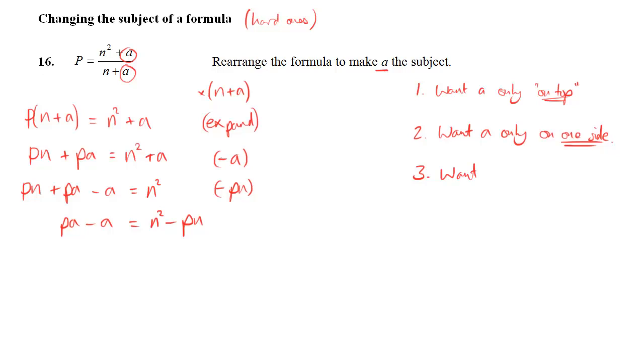Now I've got A all on one side, but I want just A. I don't want P in there. And the only way to get rid of it is to factorize. We can't subtract the P or divide by that, it won't get rid of it. But if we factorize, we can do it.